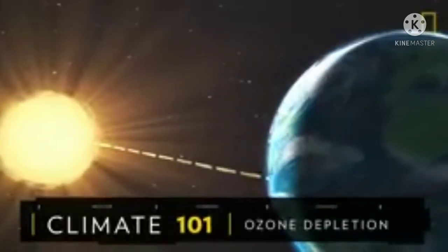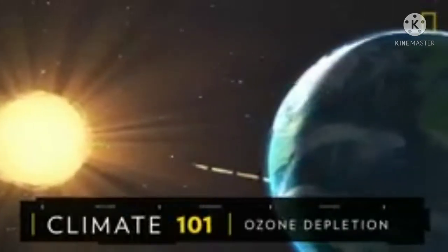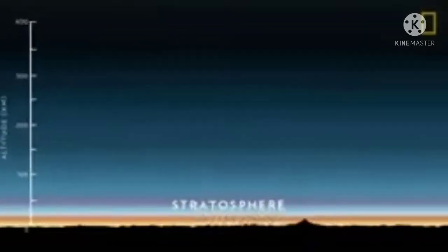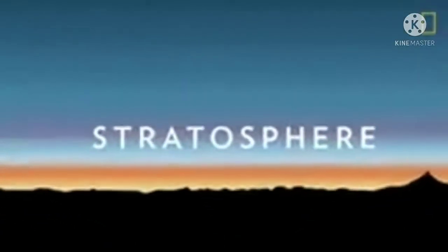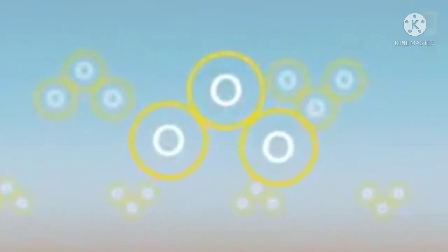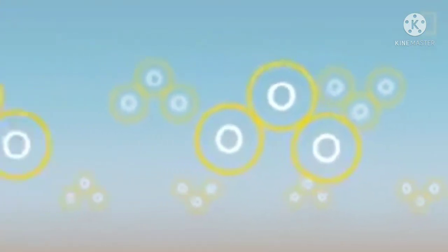Earth's atmosphere is made up of six layers. The second layer is called the stratosphere. It contains the ozone layer. The ozone layer is made up of highly reactive molecules called ozone, which contains three oxygen atoms.